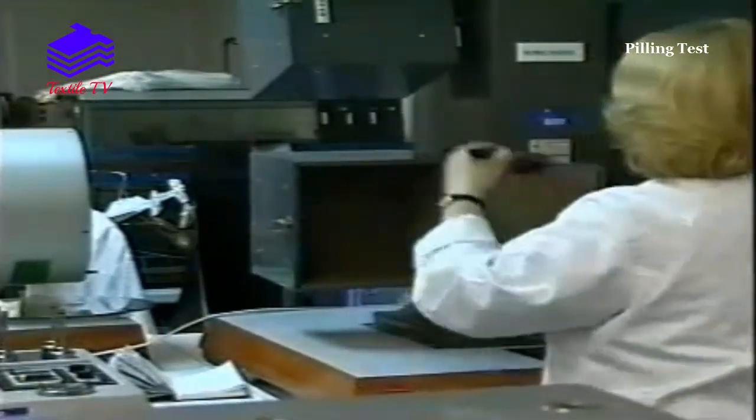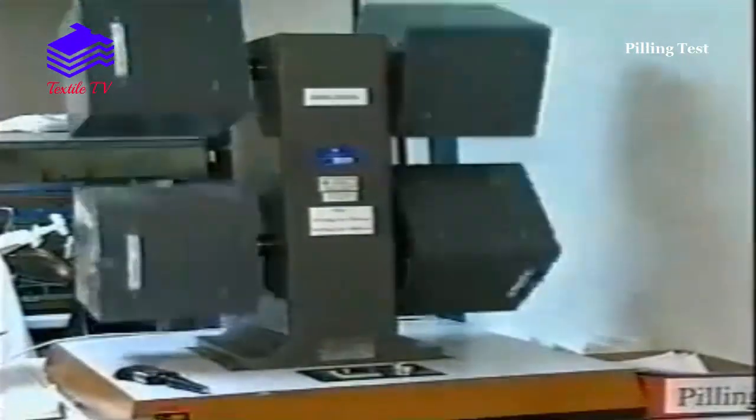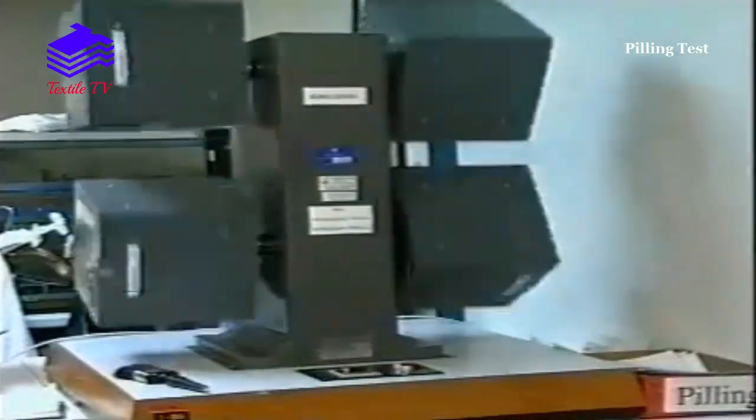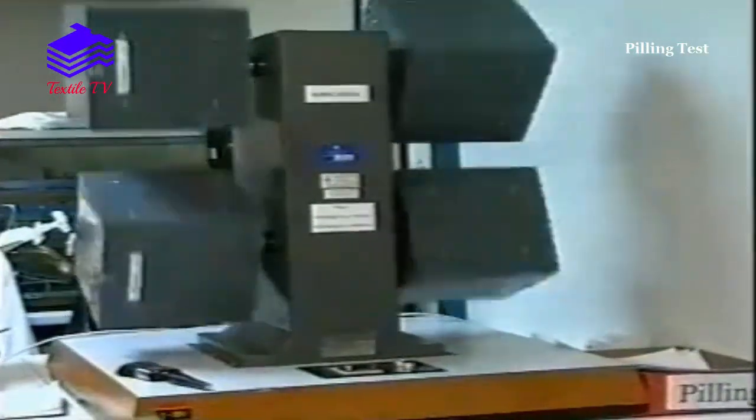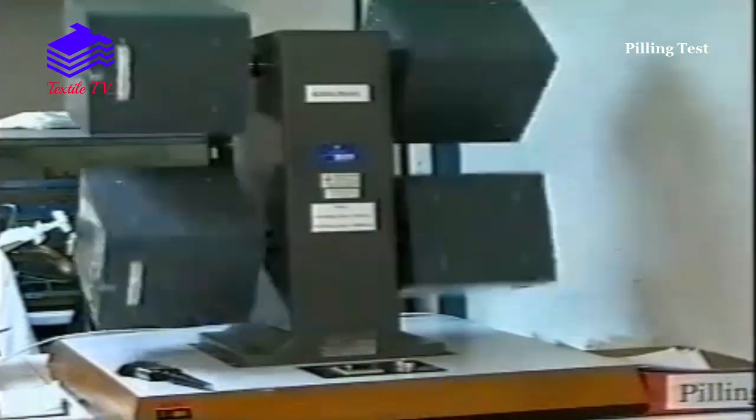The box is rotated at a set speed and test specimens mounted on rubber tubes tumble around in the box for a set number of revolutions.